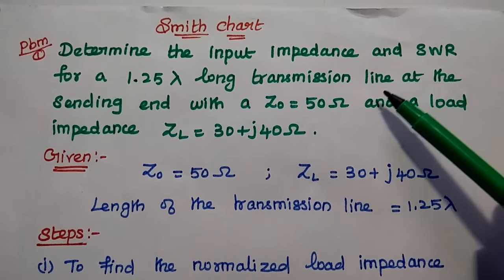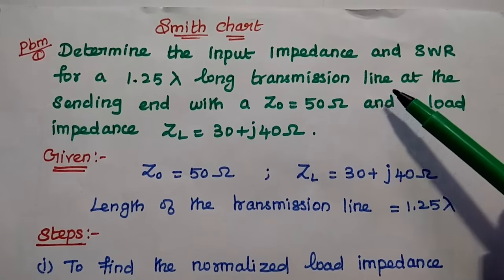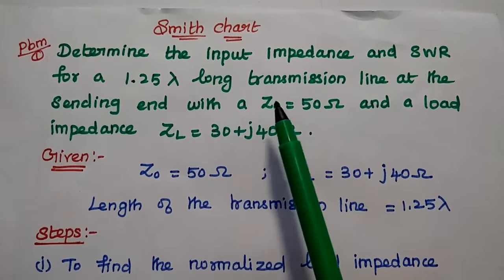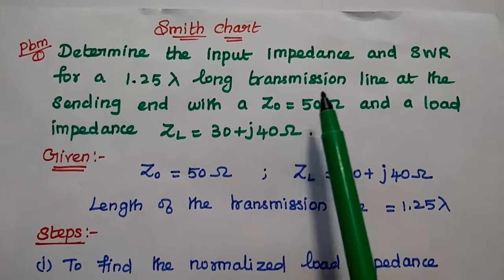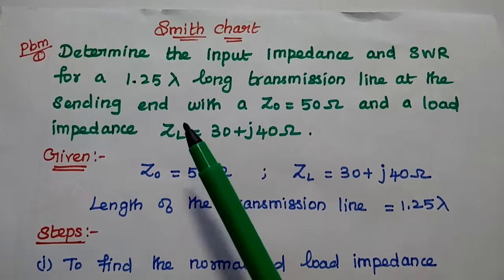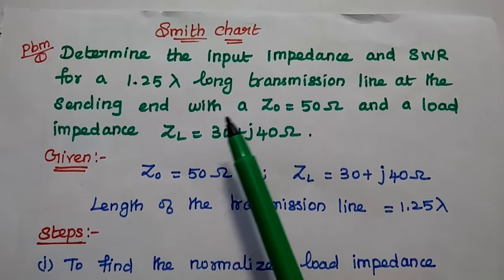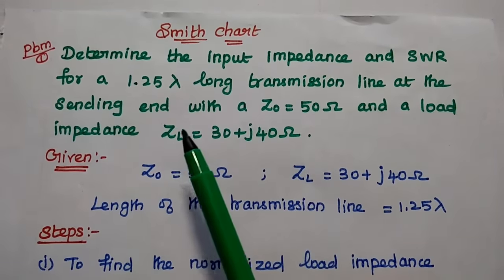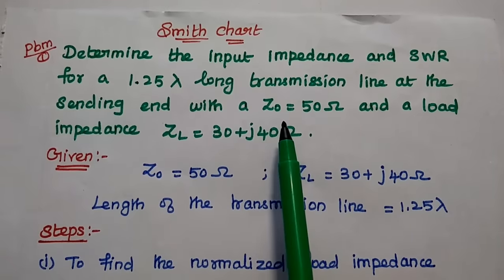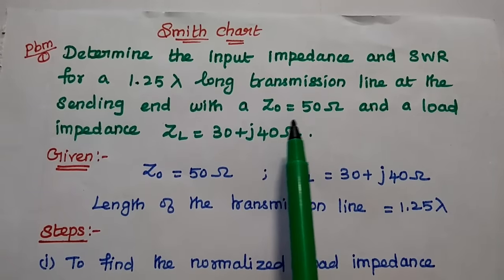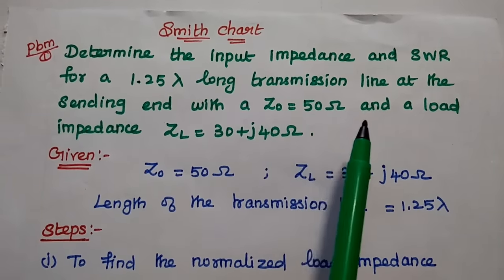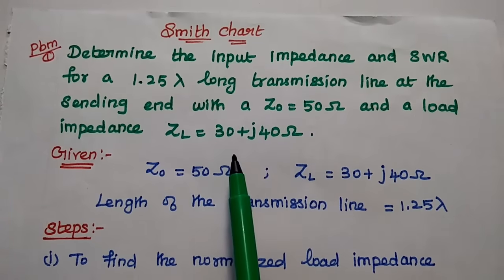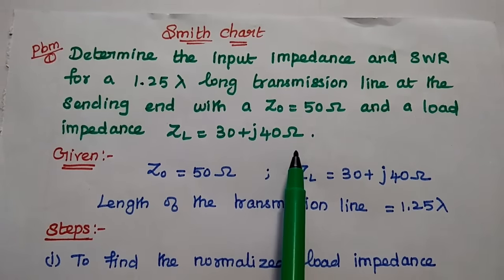Dear students, now we are going to solve one problem in Smith chart. Determine the input impedance and standing wave ratio for a 1.25 lambda long transmission line at the sending end, with the characteristics impedance Z0 equal to 50 ohm and the load impedance ZL equal to 30 plus J40 ohm.